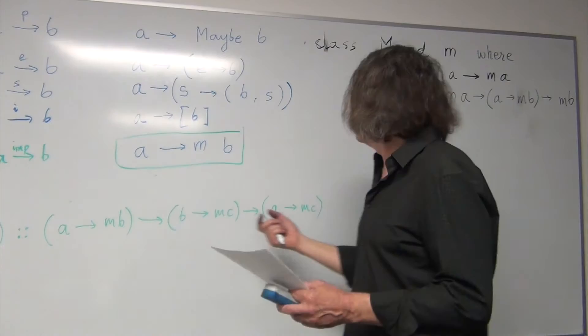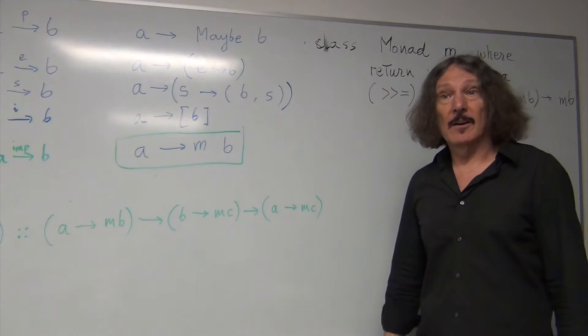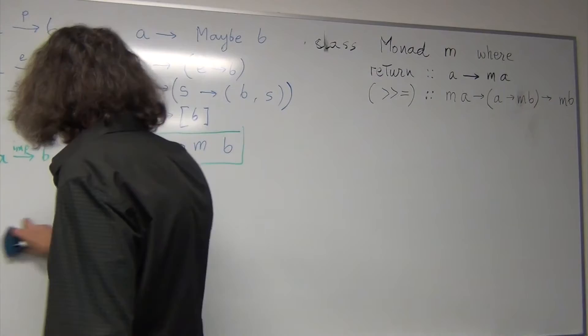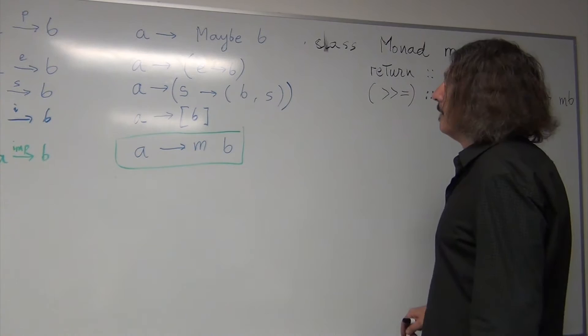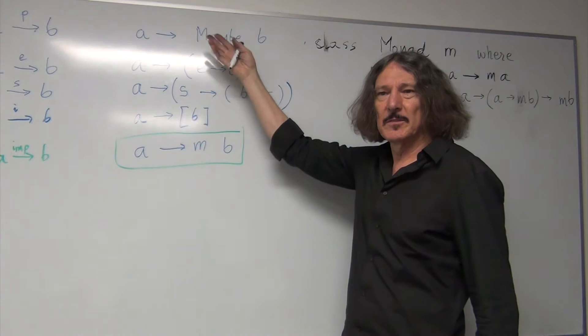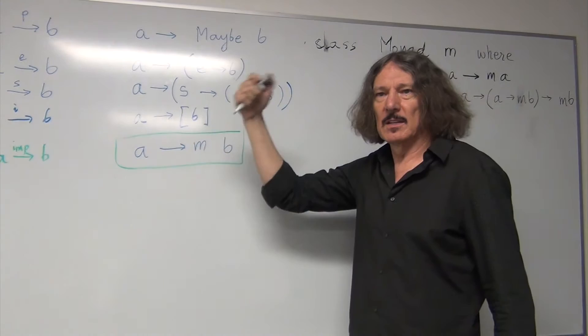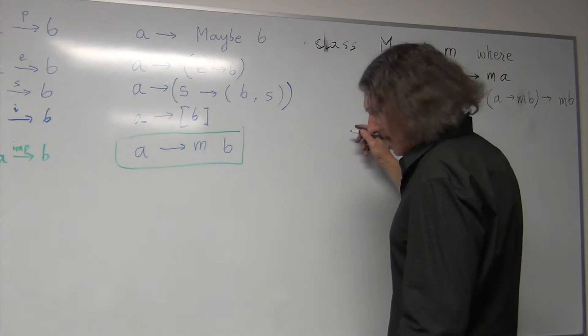So, let me give you an example. How would we define bind, let's say, for either? Erase this. So, I didn't put either here, but either is like a better version of maybe. Instead of nothing, you actually have a string or something else.